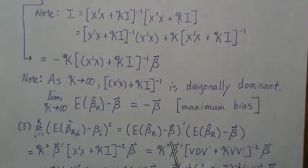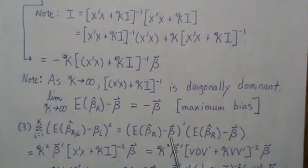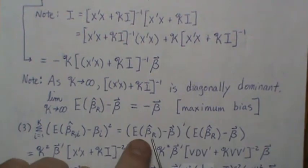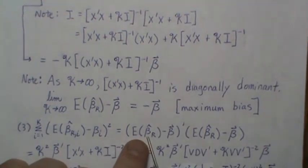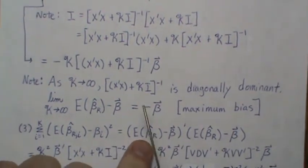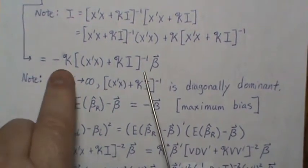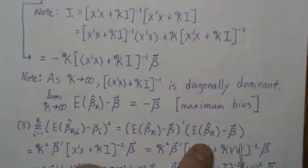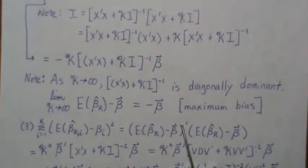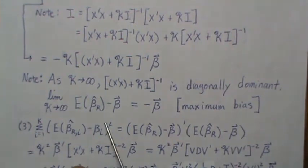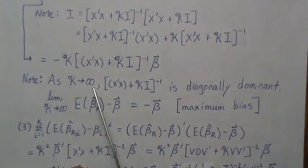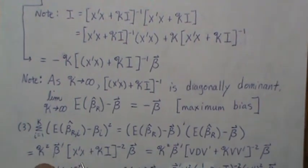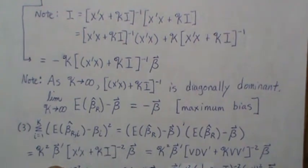Now let's plug in what we know. We take the transpose and write out what the expected value is — we just derived it above, so we plug that in and its transpose. The minus times minus cancels to a plus and we get a k squared out front.